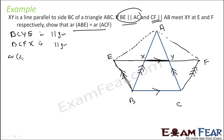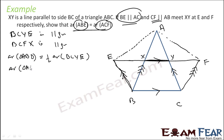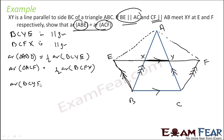Now let me drop this line. This line is parallel to AC. So you can see that VCYE is a parallelogram. Similarly, VCFX is also a parallelogram. Now if you see area of triangle ABE, there are two parallelograms, so this will be half of the area of parallelogram VCYE.